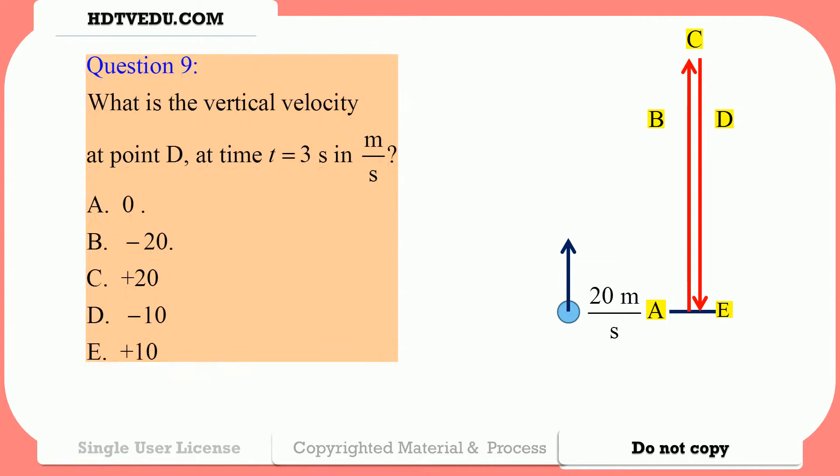Question number 9: What is the vertical velocity at point D at time t equals 3 seconds in meters per second? 0, negative 20, positive 20, negative 10, or positive 10? Question number 10: What is the vertical velocity at point E at time t equals 4 seconds in meters per second? 0, negative 20, positive 20, negative 10, or positive 10?